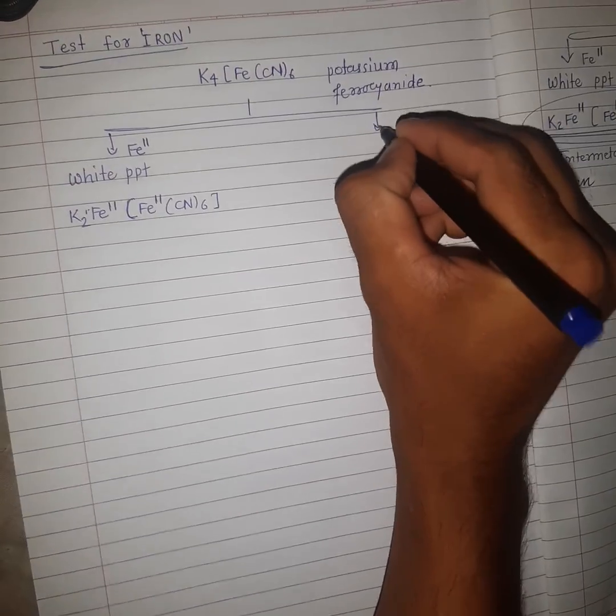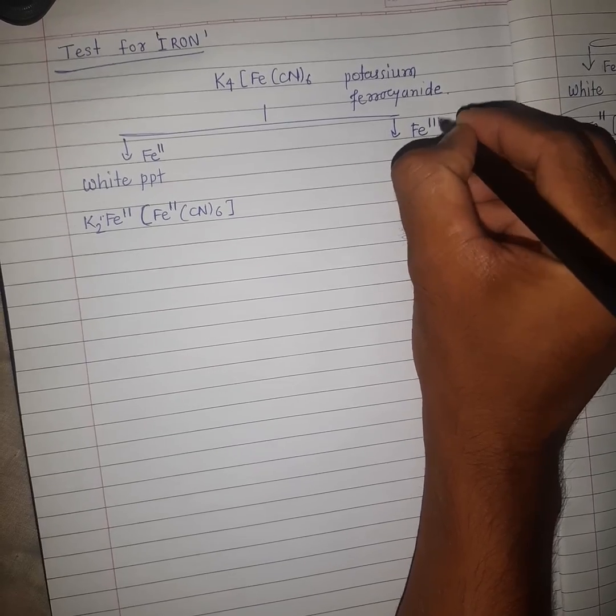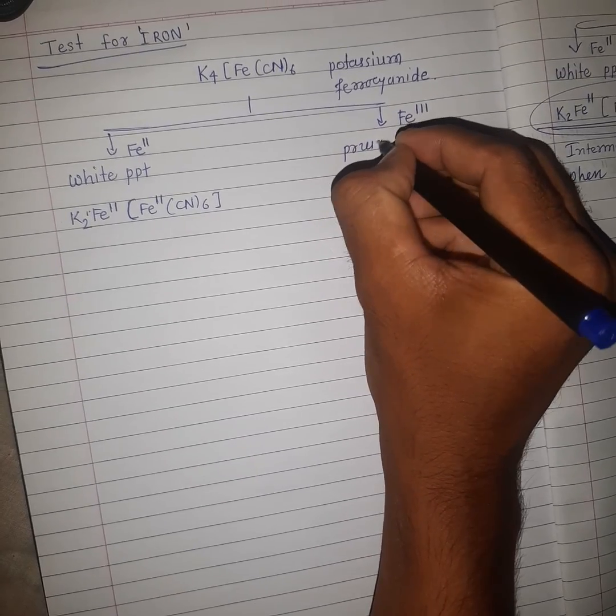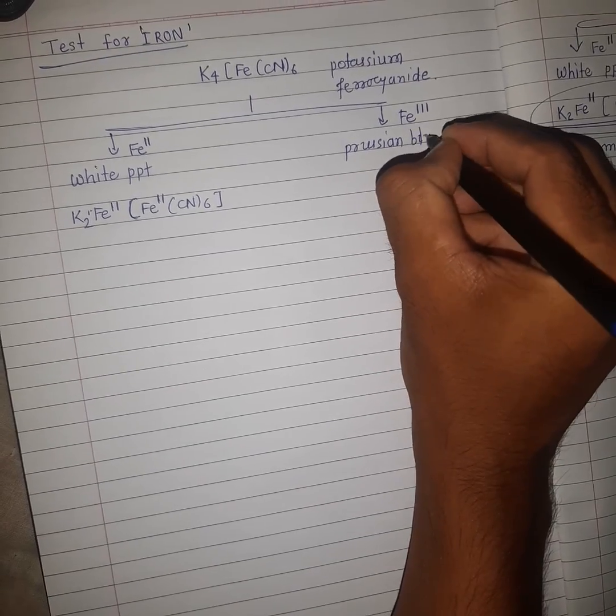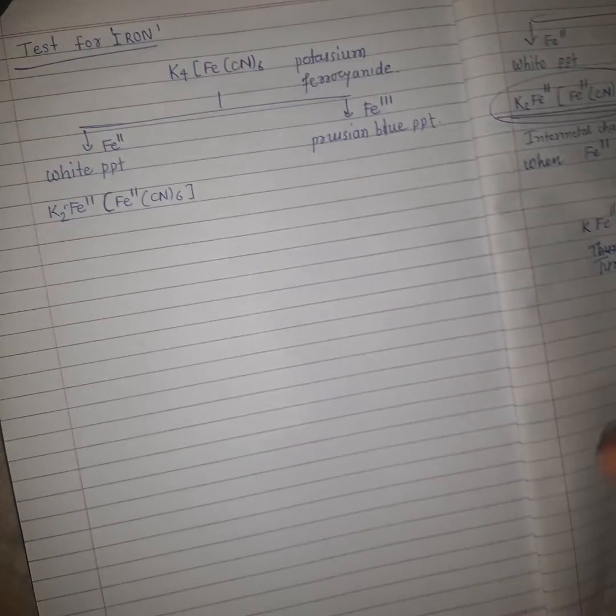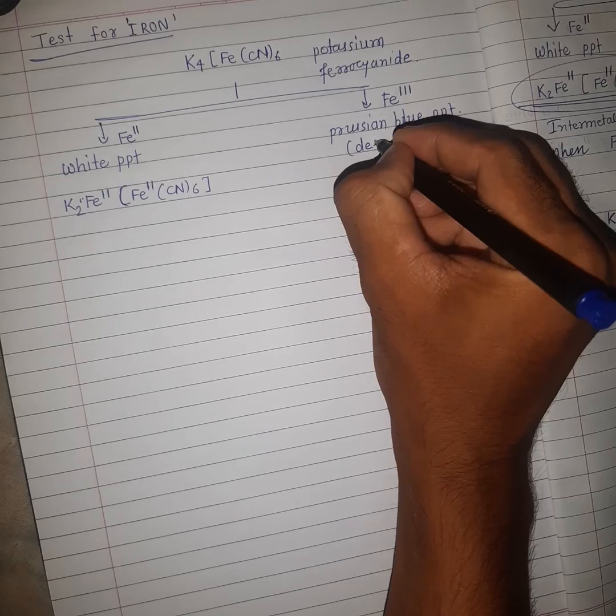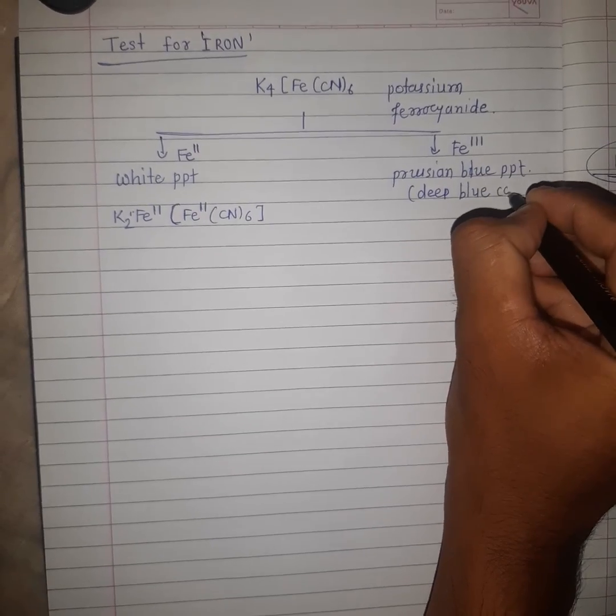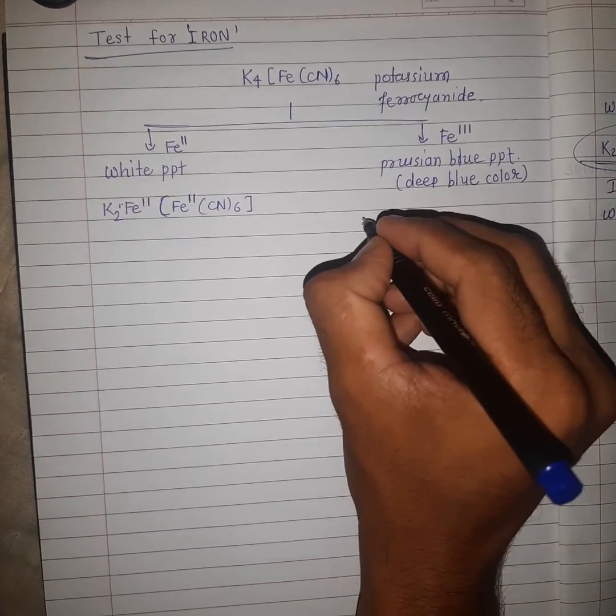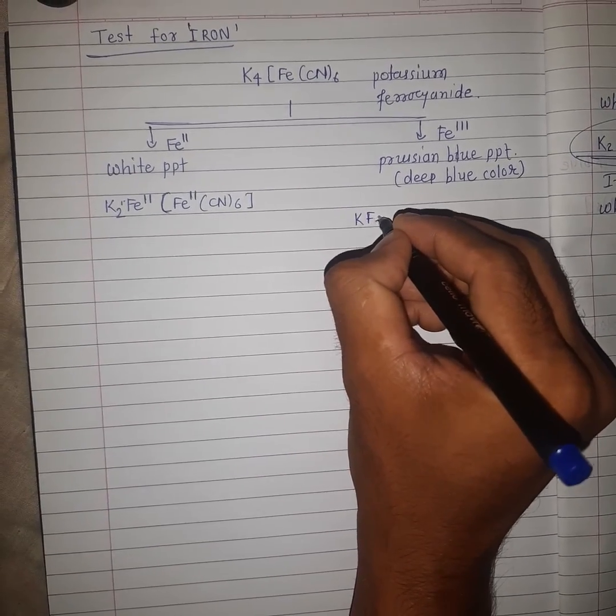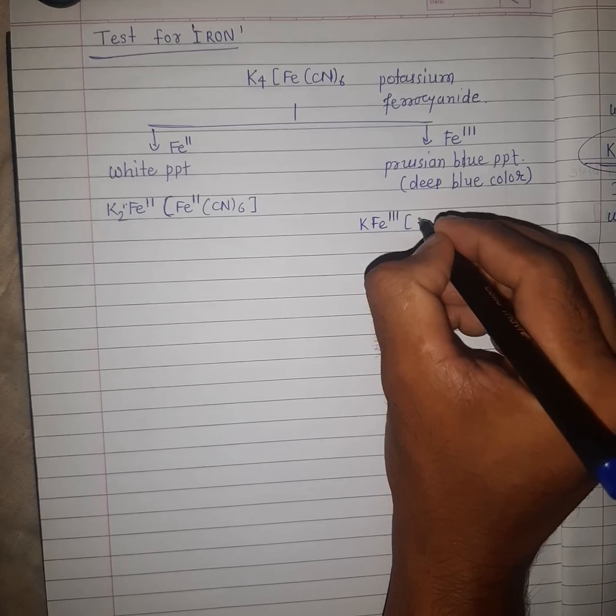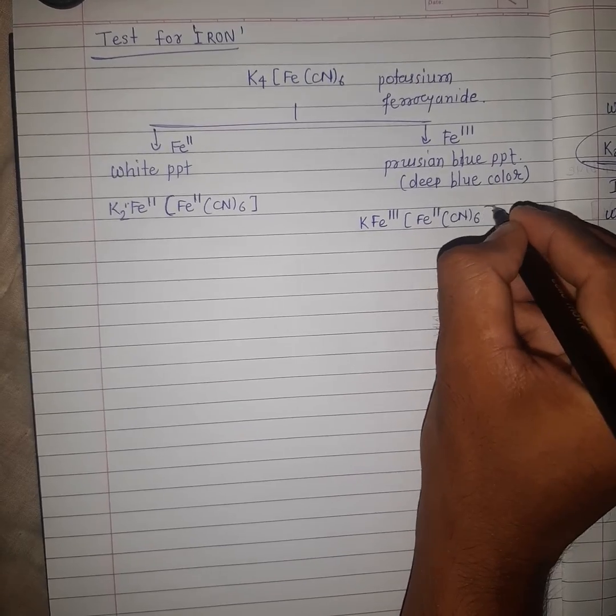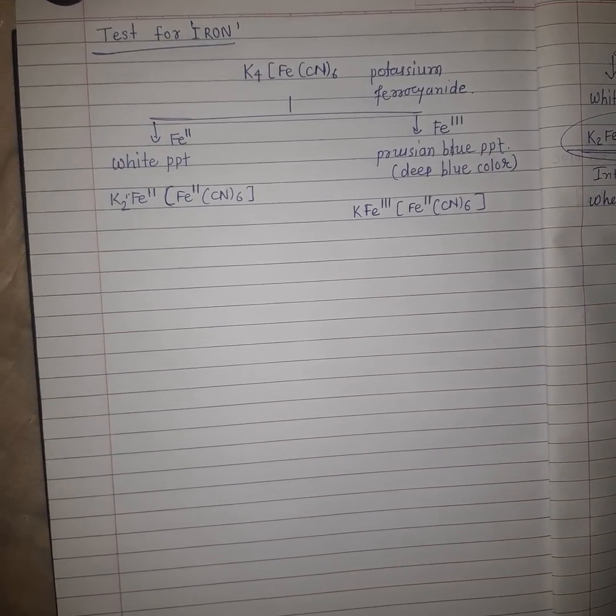When Fe3+ iron is present in the solution, it gives Prussian blue precipitate, means deep blue color of KFe[Fe(CN)6]. Thank you.